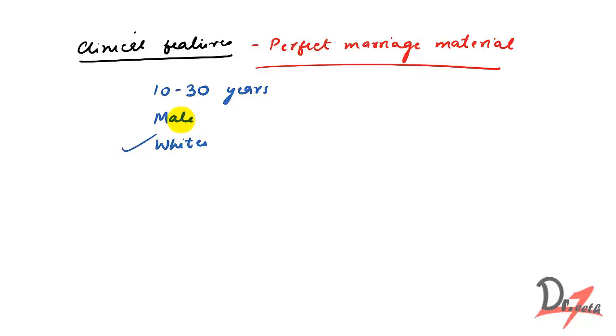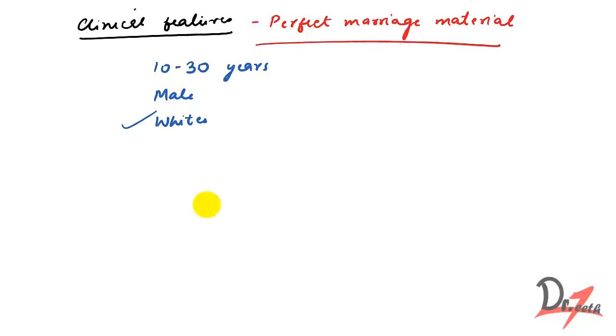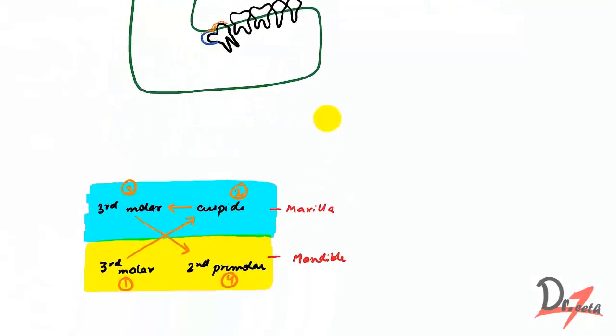And in clinical features, obviously we'll keep in mind that it occurs in unerupted tooth. But the question is, any unerupted tooth or some specific unerupted tooth? So we have a sequence for it. Let us see the sequence here. This is our sequence.